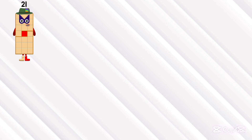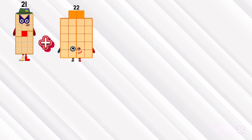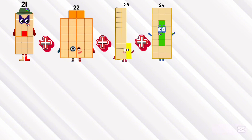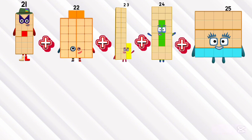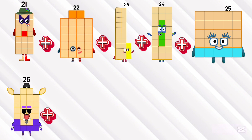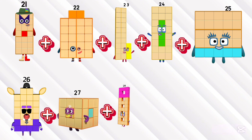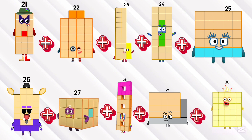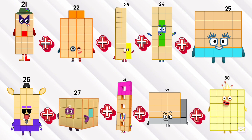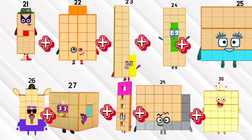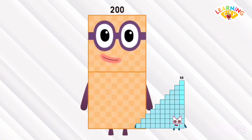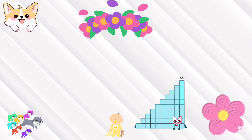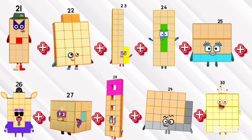21 plus 22 plus 23 plus 24 plus 25 plus 26 plus 27 plus 28 plus 29 plus 30. If we add them all together, the answer is 255. Let's do a recap. 21 plus 22 equals 43.